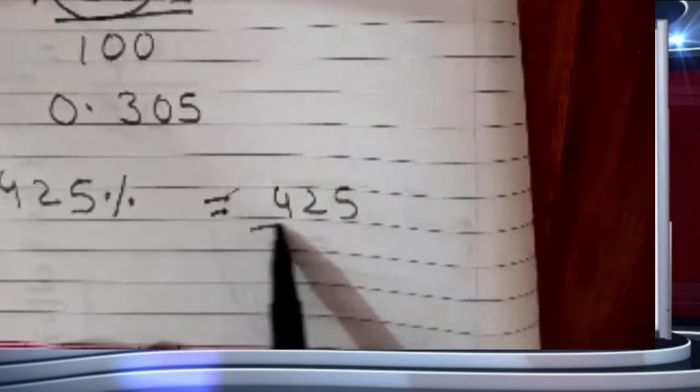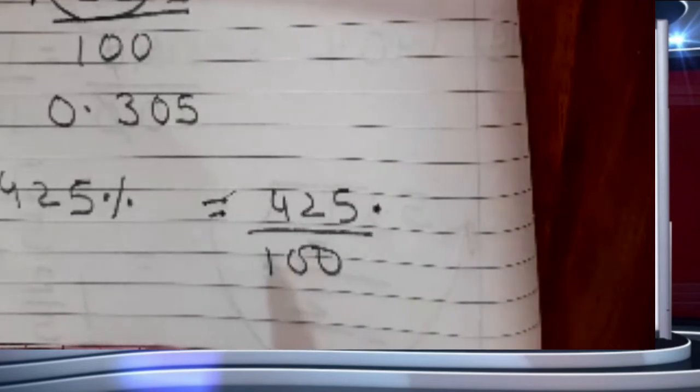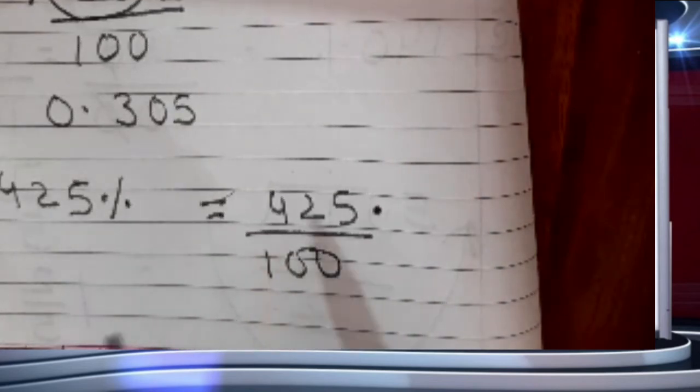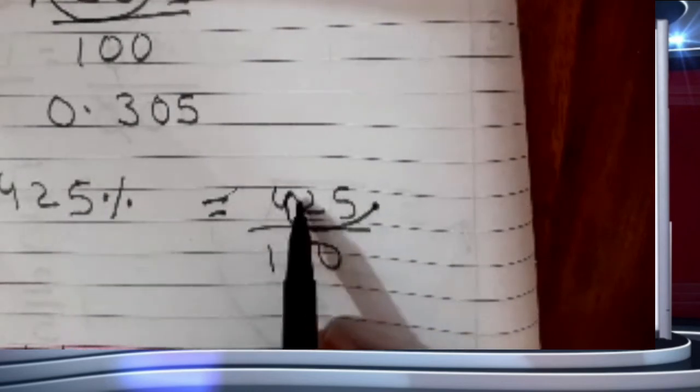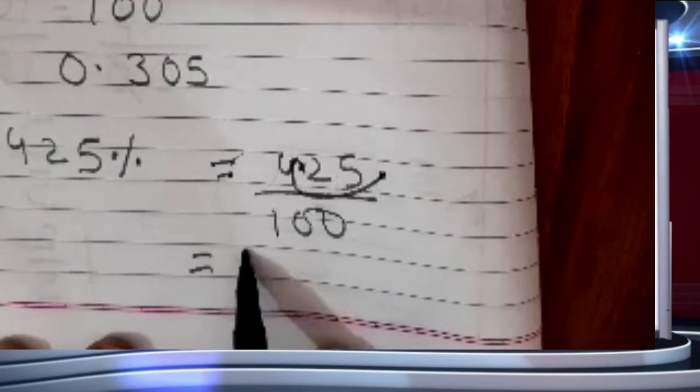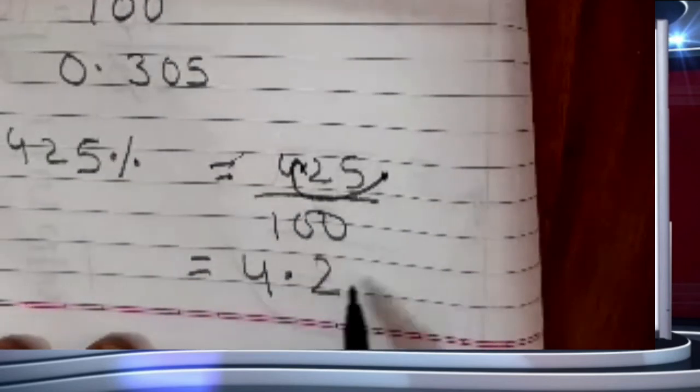The last part, part J: 425%. To remove the percent sign I write upon 100. There is no decimal, so I place it on the rightmost side. Shifting 2 places to the left gives the answer 4.25.